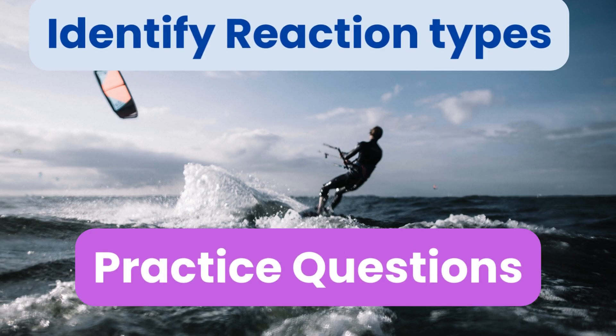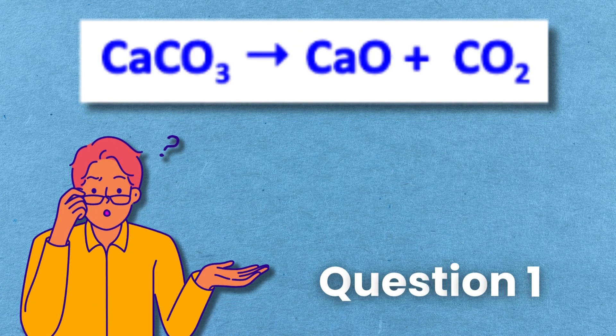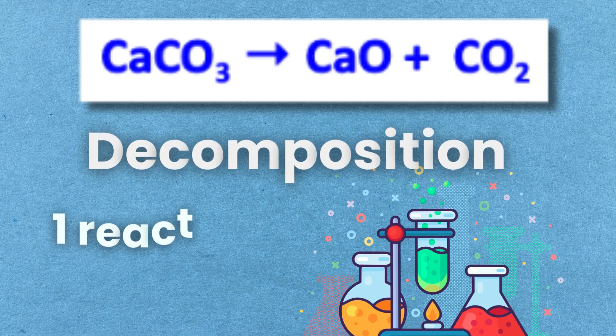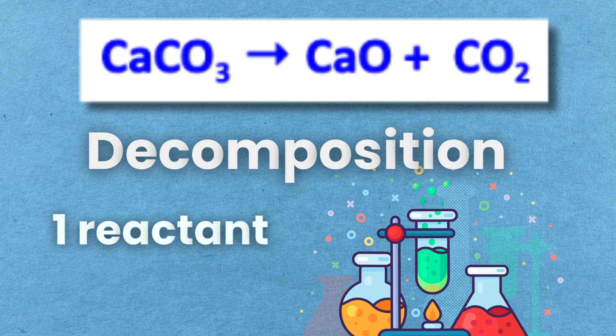Practice questions. CaCO3 gives CaO plus CO2. This is a decomposition reaction where calcium carbonate breaks down into calcium oxide and carbon dioxide.